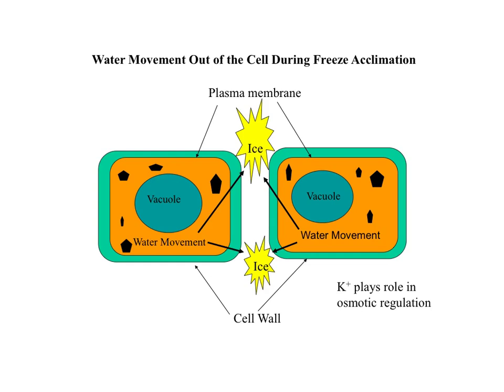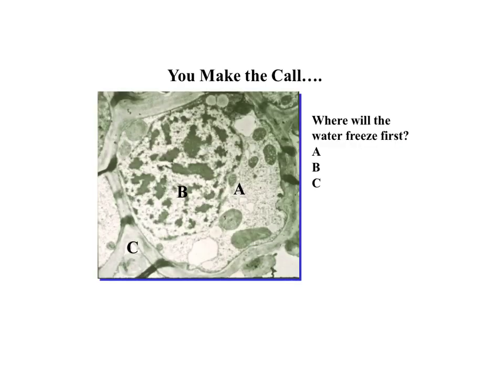The cell's plasma membrane is critical in regulating water movement. Here is a picture of a plant cell for a quick review. As the plant begins to lose water as it begins to harden off, where will the water freeze first? The correct answer is C — the spaces between the cells. If it froze in A or B, which are internal to the cell, real damage would occur.